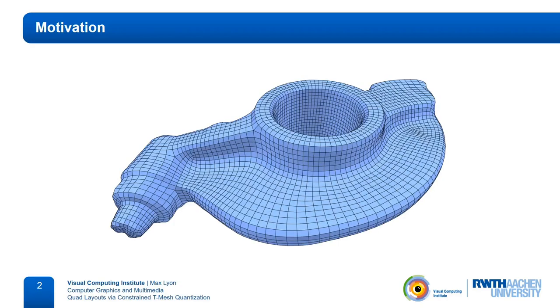Quad meshes are useful in a variety of applications, from animation to engineering. High-quality quad meshes should be semi-regular, meaning that most vertices are incident to four quads, while only a few singularities are incident to a different number of quads.